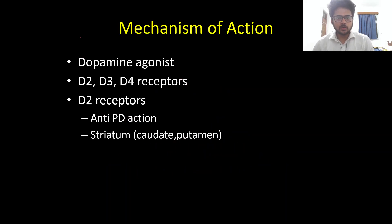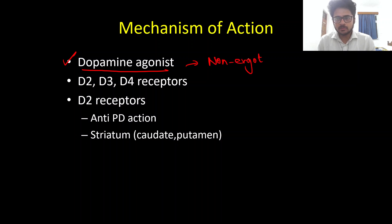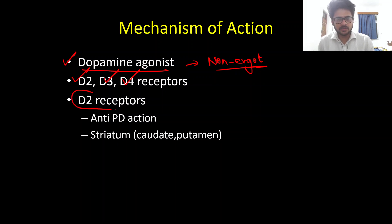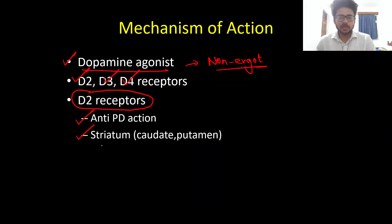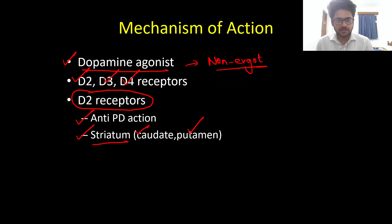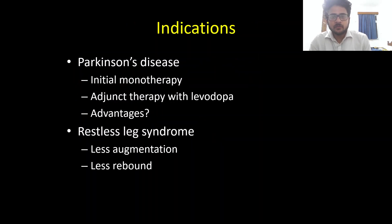With regard to ropinirole, its mechanism of action — as most of you know — is that it is a dopamine agonist. Specifically, it is a non-ergot dopamine agonist, and it exerts its action predominantly on the D2, D3, as well as D4 receptors. Its main anti-Parkinson's action is due to action on the D2 receptors, predominantly acting on the striatum, which involves the caudate and putamen.